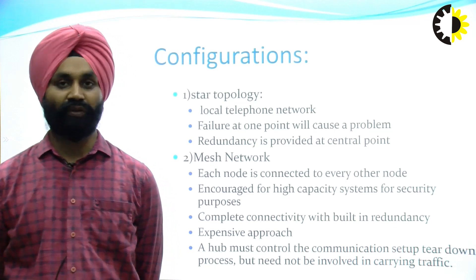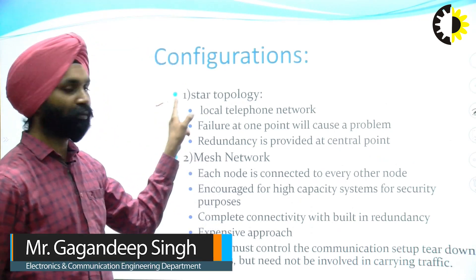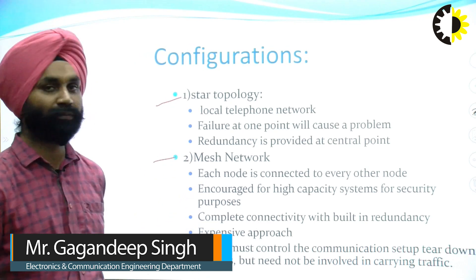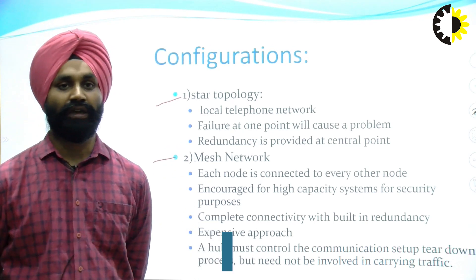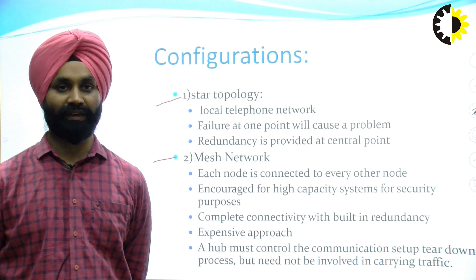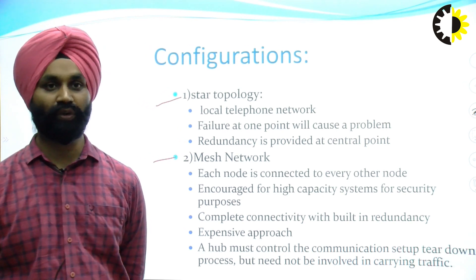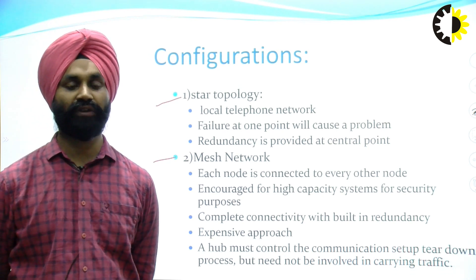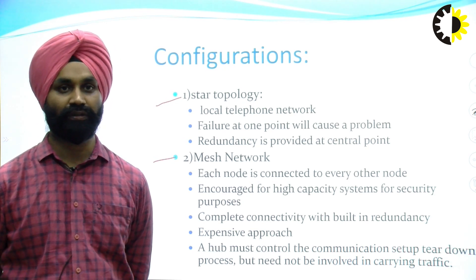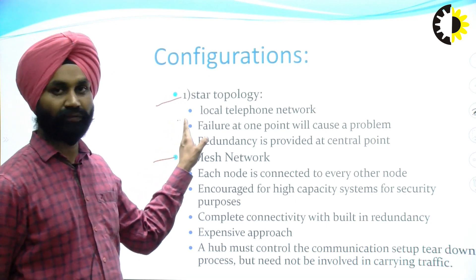There are mainly two configurations in satellite communication. The first one is the star topology and the second one is the mesh topology. In star topology, the satellite acts as a central node, and all other nodes are connected with that central node — for example, the local telephone network is a kind of star topology network.